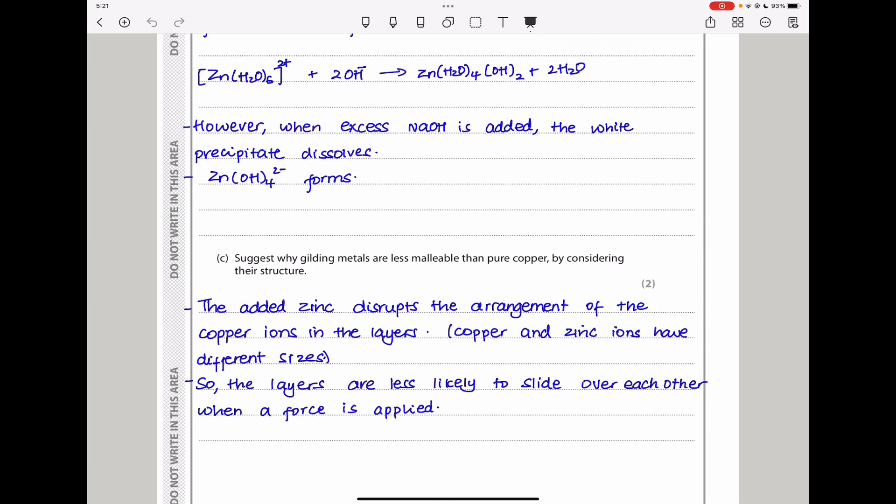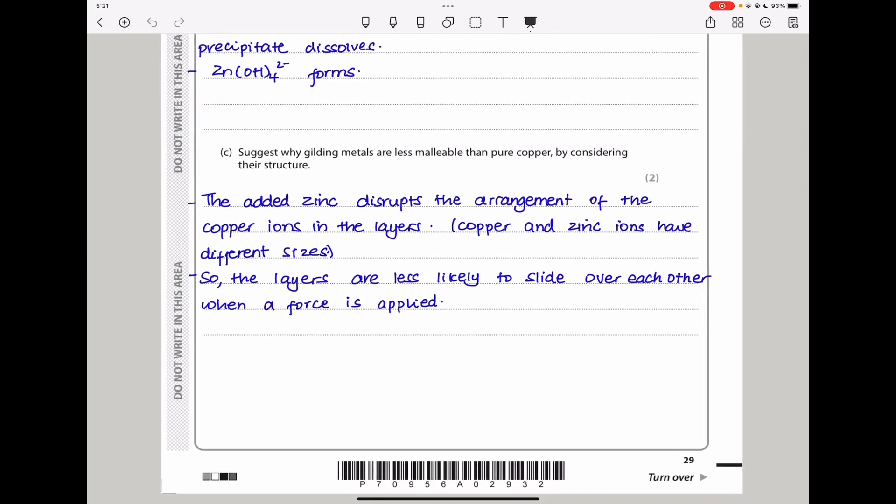Suggest why gilding metals are less malleable than copper by considering their structure. Malleability is ability for something to be reshaped. Addition of zinc into copper changes the structure. The added zinc disrupts the arrangement of the copper ions in the layers. Copper and zinc ions have different sizes, so the layers are less likely to slide over each other when a force is applied.